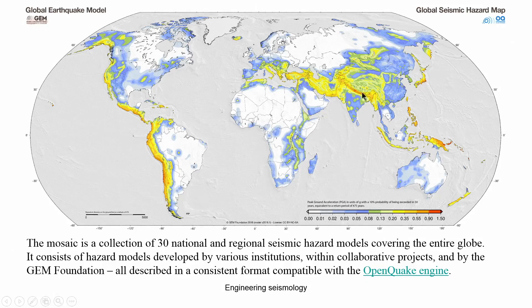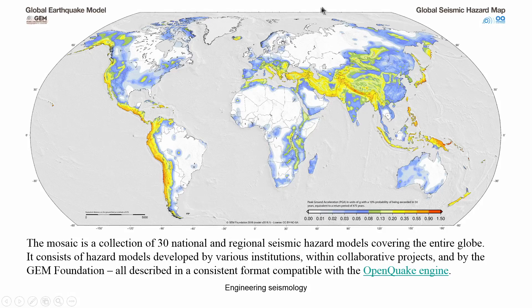You can see the hazard distribution at different places on the GEM map. Overall at the plate boundaries there is more seismic hazard compared to non-plate boundary regions. The PGA distribution shows peak ground acceleration in the unit of G with 10 percent probability of exceedance in 50 years, equivalent to a return period of 470 years. The map is interactive in nature.